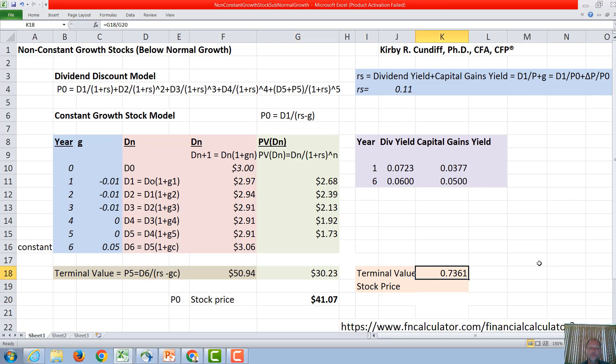Note that most of the stock price, in this case 74%, is based on the terminal value. So what happens to the stock long-term influences things a lot more than the fact we're in a mild recession now. The stock is going to be very dependent on this long-term growth rate. It's also going to be very dependent on the required rate of return.